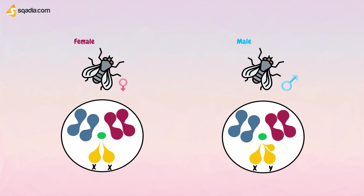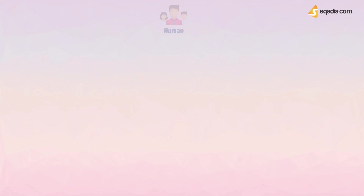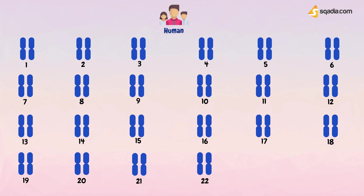In humans, there are 23 pairs of chromosomes. 22 pairs are autosomes, while one pair is the sex chromosome. In females it is XX, and XY in males. Human females have two copies of the X chromosome, and all egg cells produced by a woman contain one X chromosome. In males, half of the sperms contain an X chromosome and half contain a Y chromosome. The sex chromosome carried by the sperm therefore determines the gender of the child.